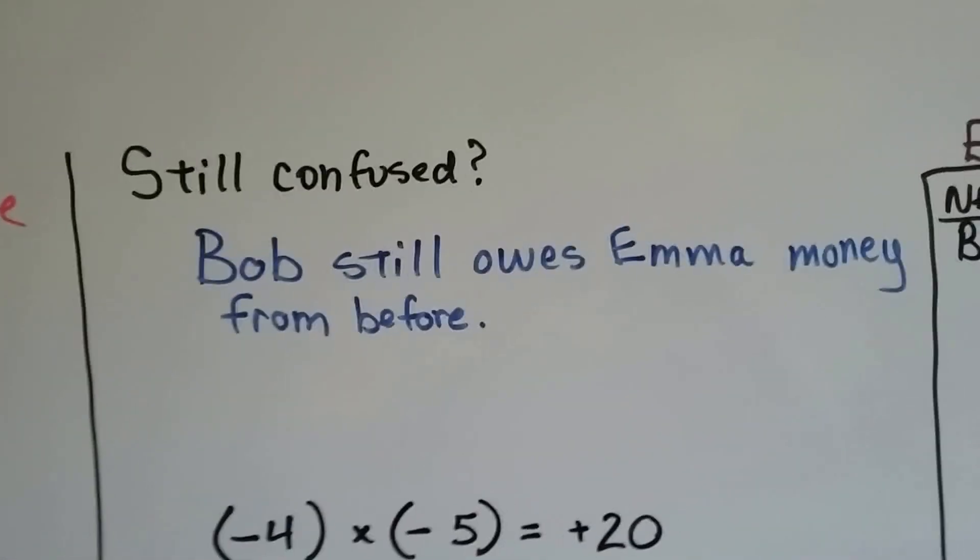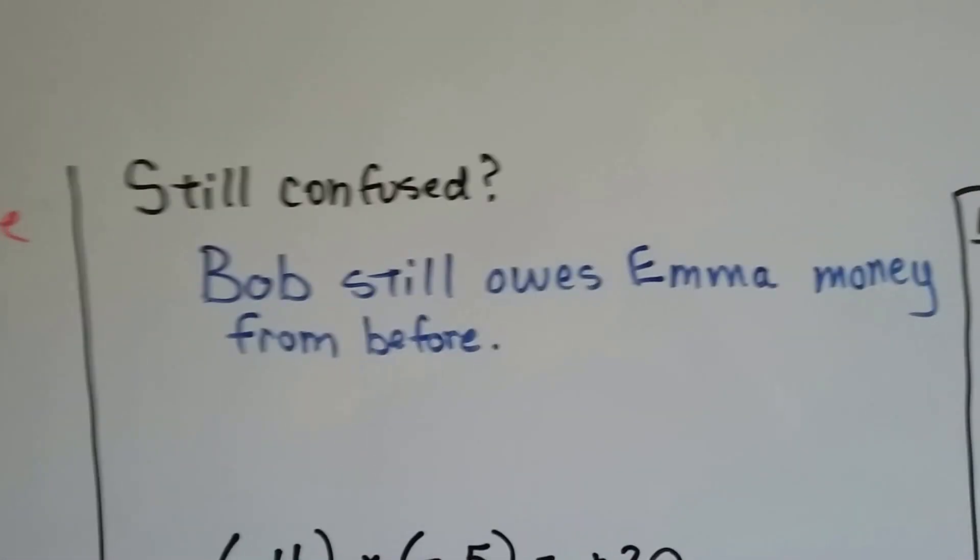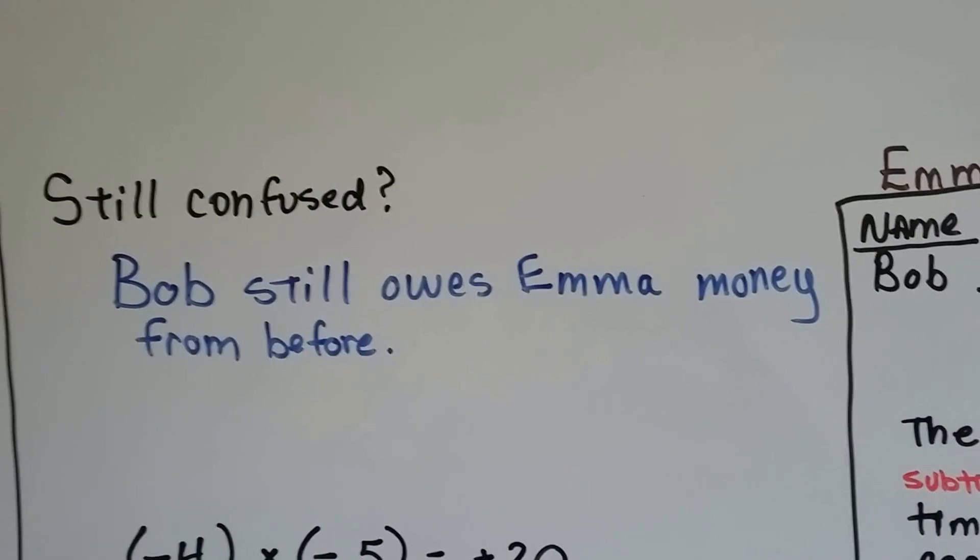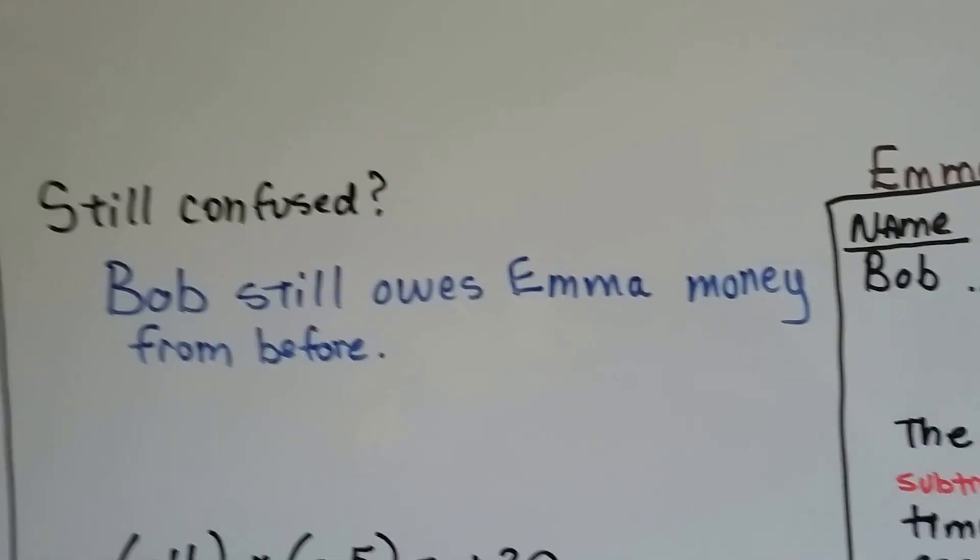Alright? Are you still confused? Do you still not know why two positives make a negative? Alright. Bob still owes Emma money from before when we were adding and subtracting the integers.